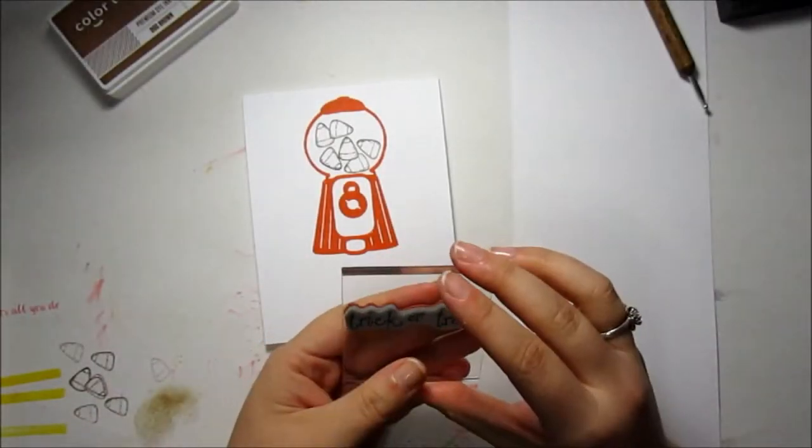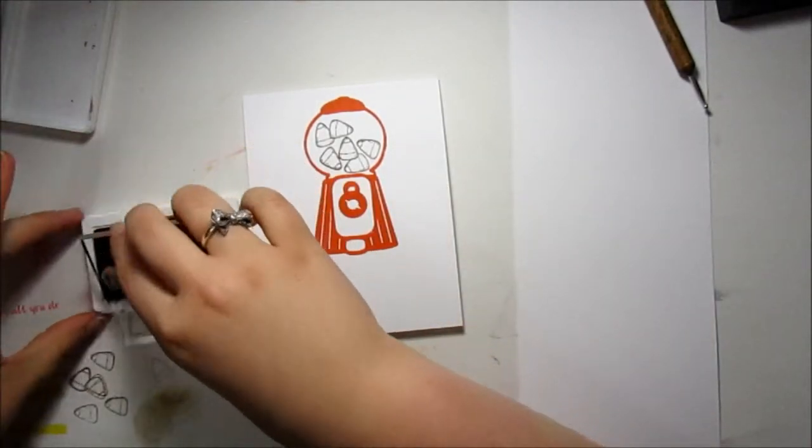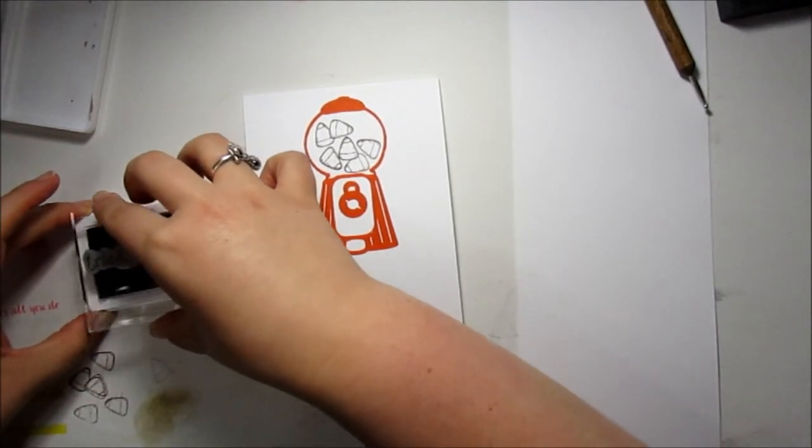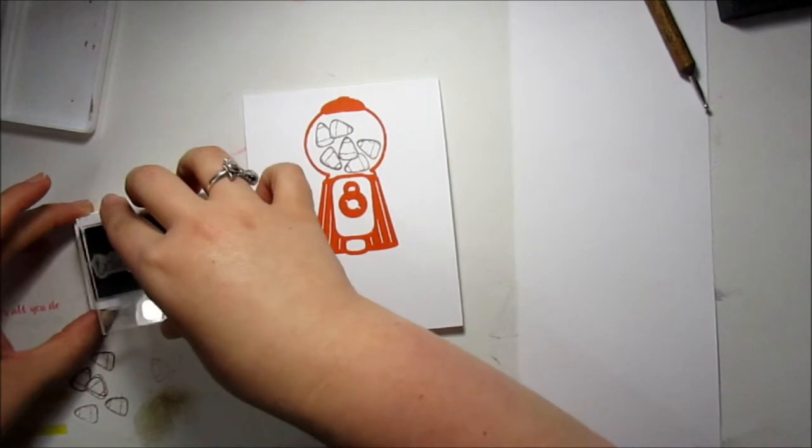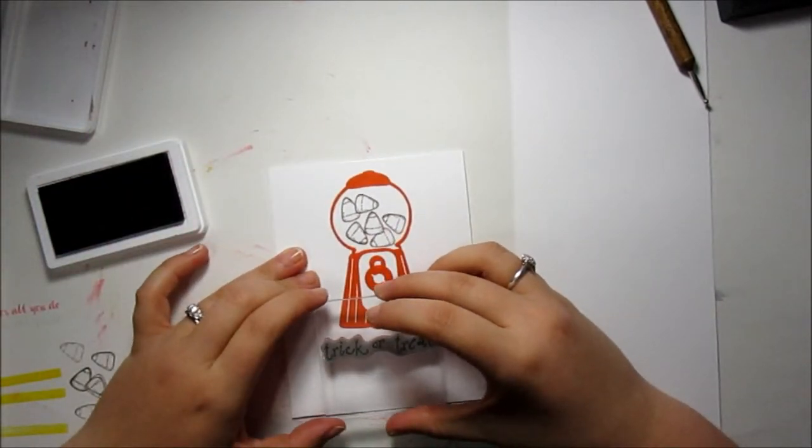Now next up I'm going to stamp my sentiment. It just says trick or treat. I'm going to use the same Doc Brown ink just to kind of keep everything all together. I'm going to make sure that's inked up really well and then I'm just going to stamp that right below the gumball machine.